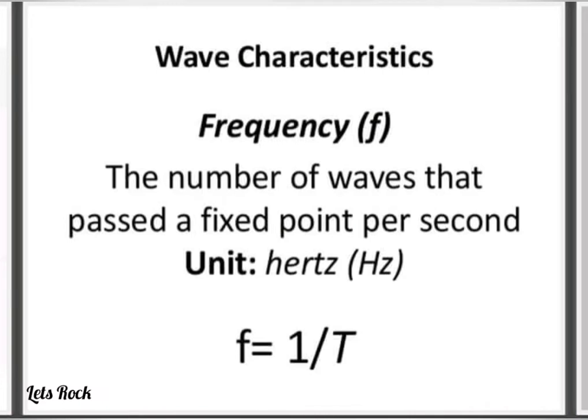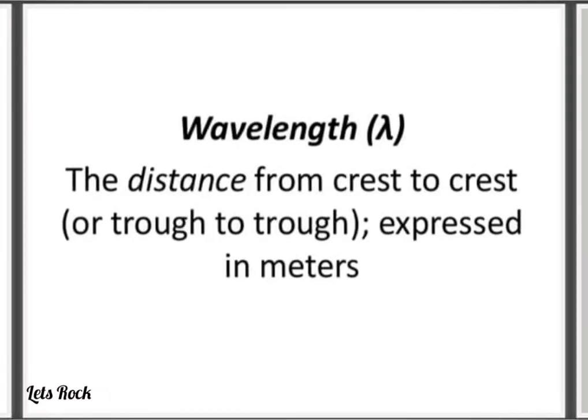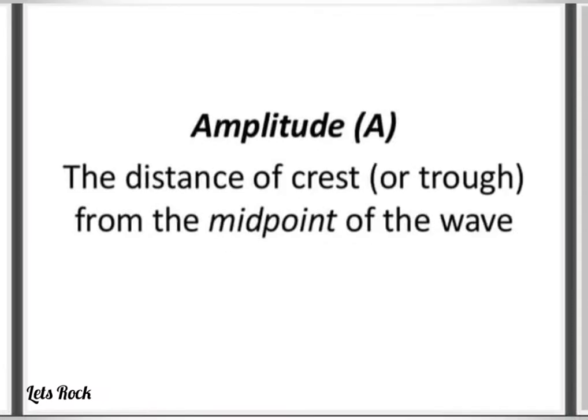Wave characteristics: Frequency - the number of waves that pass a fixed point per second, unit is hertz. Wavelength - the distance from crest to crest or trough to trough, expressed in meters. Amplitude - the distance of crest or trough from the midpoint of the wave.